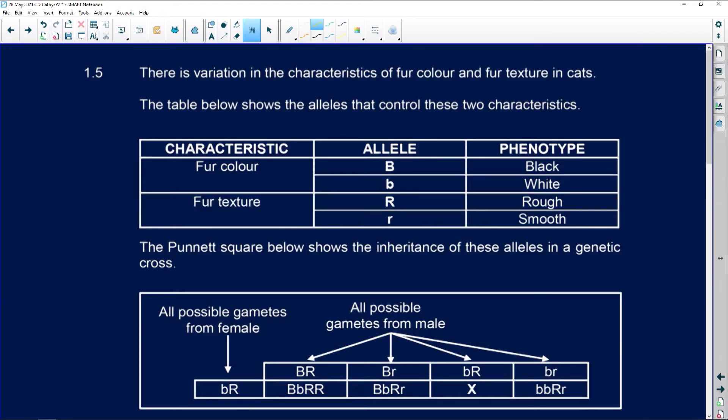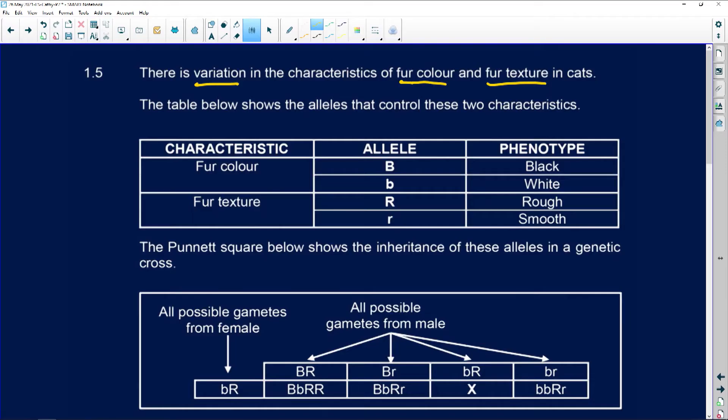Okay, now there is variation in the characteristics for fur color and fur texture in cats. And if any of you have cats, you will know that cats have either that soft silky fur or they have quite coarse fur, and then of course the colors that you have. Now the table below shows the alleles that control the two characteristics. Something else I want to point out here: the word characteristics is equal to the word traits. So you'll find sometimes questions will refer to characteristics and others they refer to traits. It's the same thing, they are interchangeable.